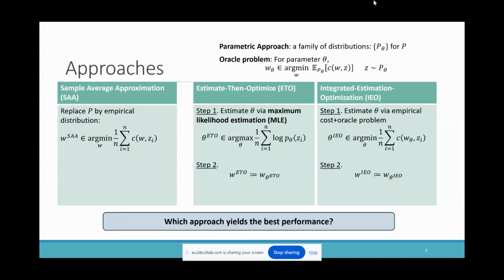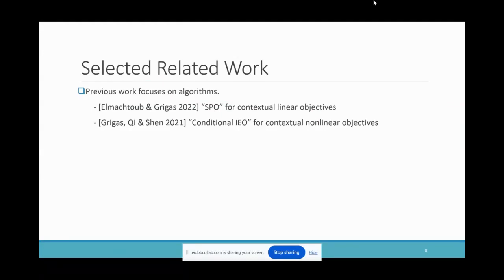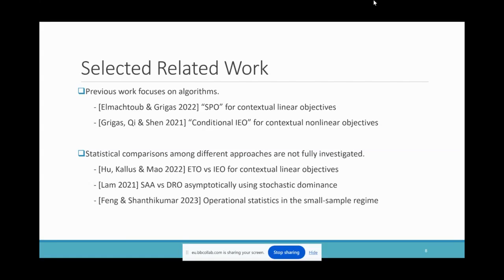Our task is to answer a fundamental question about which approach provides the best performance. Recently, several papers have proposed various approaches for data-driven optimization, such as the SPO framework for contextual linear optimization and the conditional IEO framework for contextual nonlinear optimization with discrete distributions. They mainly focus on developing algorithms or demonstrating general effectiveness. As different papers adopt very different settings, statistical comparisons among approaches are not very clear.